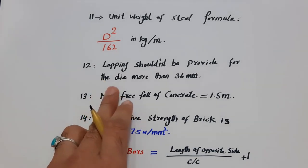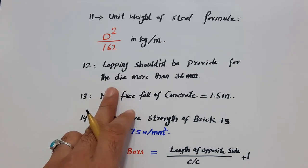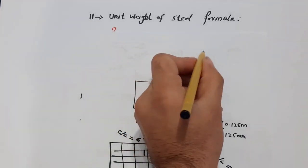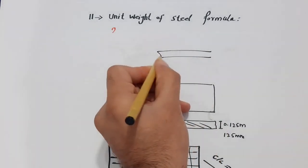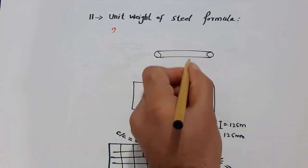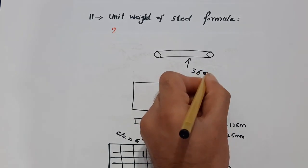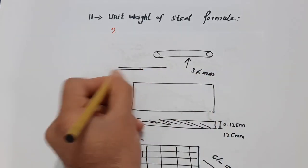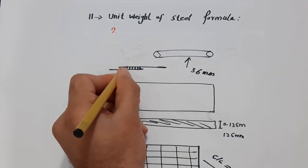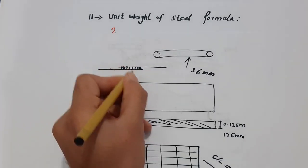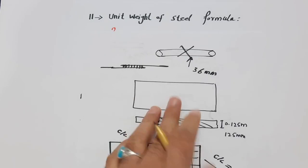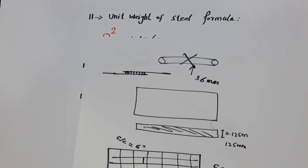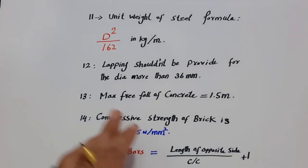The twelfth one is that lapping should not be provided for steel rods with a diameter more than 36 millimeters. As you can see, if the diameter exceeds 36 mm, lapping is not allowed. Instead, you should use the coupler method or another alternative.